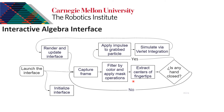If we don't have any hand closed, then we proceed to capture another frame. If we do have a hand closed, we apply an impulse to the graph particle and simulate all of the particles via Verlet integration. Then we render and update the interface and proceed to capture another frame.